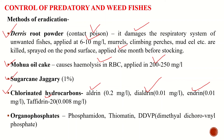Aldrin, dieldrin, endrin, and thiodan 20 are applied for the eradication of predatory and inhibitory fishes. We can apply aldrin at 0.2 mg per liter, dieldrin at 0.01 mg per liter, endrin at 0.01 mg per liter, and thiodan 20 at 0.008 mg per liter. These can affect eradication of many unwanted species, and their toxic effect remains for about 12 to 15 days in the pond.